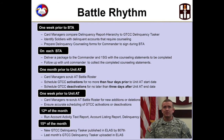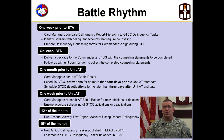One week prior to battle assembly weekend, card managers compare the delinquency report hierarchy to the GTCC Delinquency Tasker, identify soldiers with delinquent accounts that require counseling, and prepare delinquency counseling forms for the commander to sign during BTA. On each BTA, deliver a package to the commander and first sergeant with the counseling statements to be completed, then follow up with the unit commander to collect the completed counseling statements.